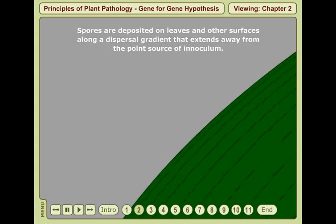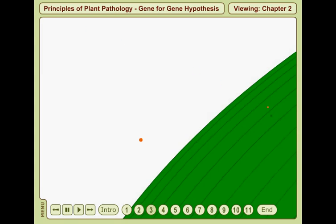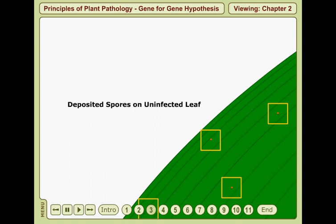Some of the spores released from an infected leaf will be deposited by gravity or rain onto an uninfected leaf of a nearby or distant plant.